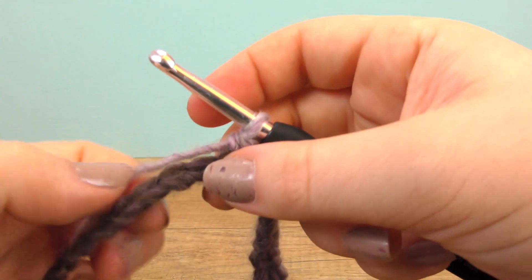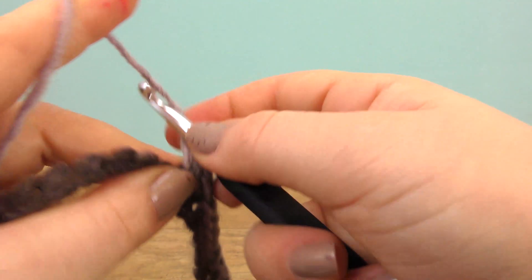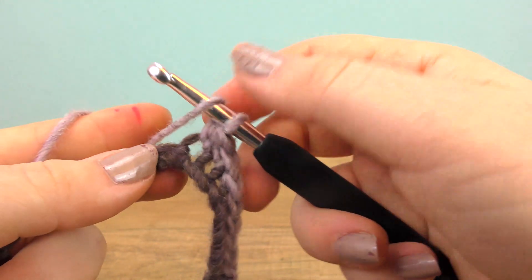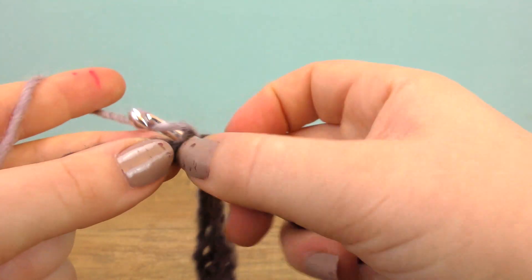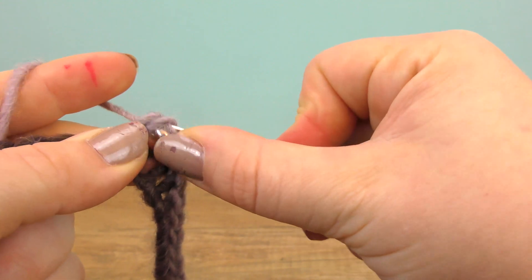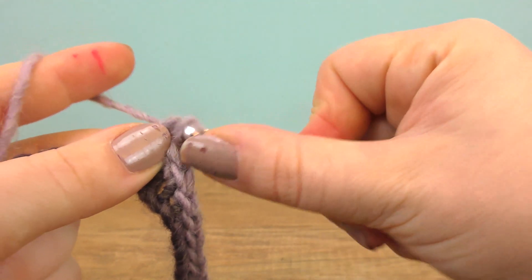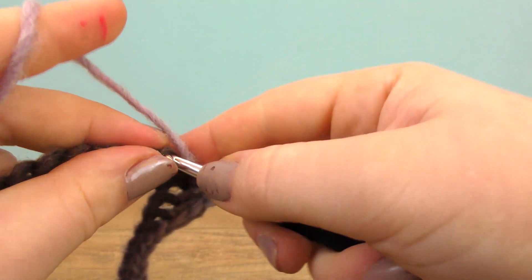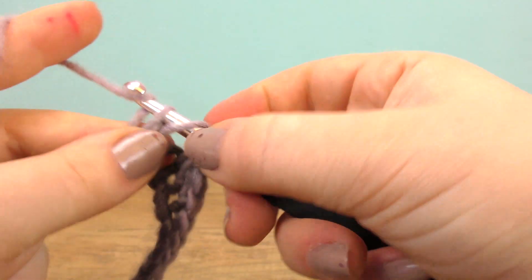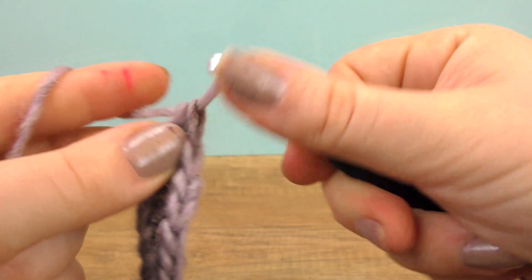And now the next 25 stitches get trebles again. This is a symmetrical shape. I'll be back when I finish that.